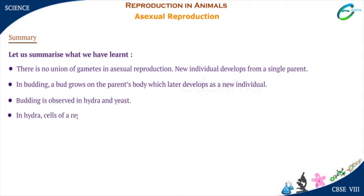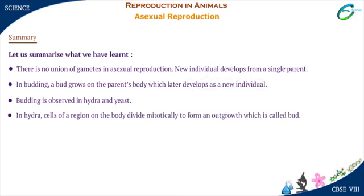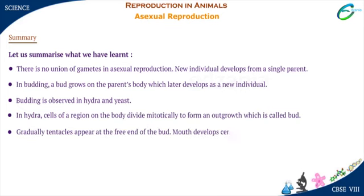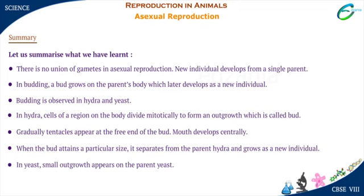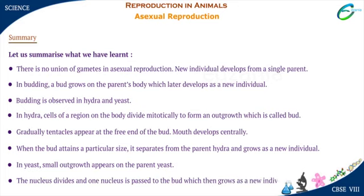In hydra, cells of a region on the body divide mitotically to form an outgrowth called a bud. Gradually, tentacles appear at the free end of the bud, and the mouth develops centrally. When the bud attains a particular size, it separates from the parent hydra and grows as a new individual. In yeast, a small outgrowth appears on the parent yeast; the nucleus divides and one nucleus is passed to the bud, which then grows as a new individual.